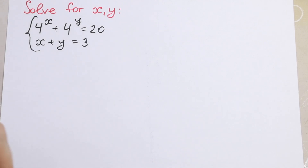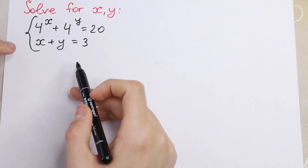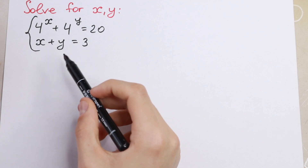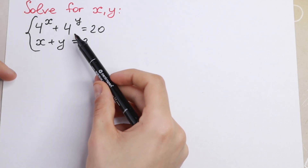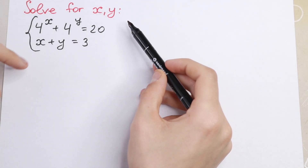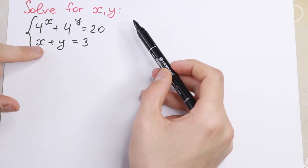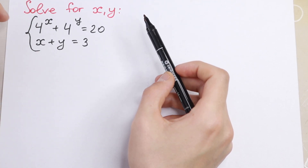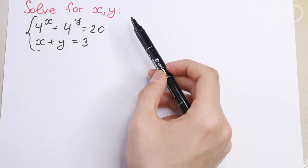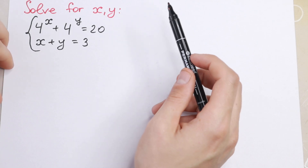Hello everyone and welcome back to my channel. In this video we are going to solve this interesting system of equations. We have two equations: the first in exponential form and the second in simple form. We'll have x plus y equal to 3, and 4 to the power x plus 4 to the power y equal to 20. We need to solve these equations.